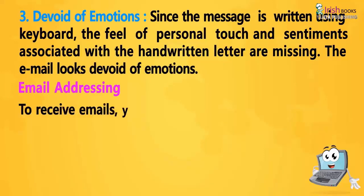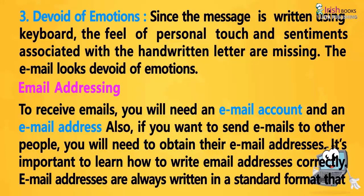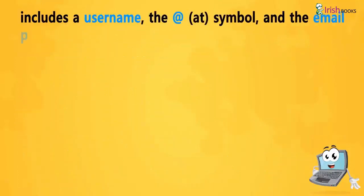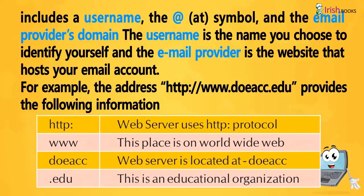Email Addressing: To receive emails, you will need an email account and an email address. Also, if you want to send emails to other people, you will need to obtain their email addresses. Email addresses are always written in a standard format that includes a username, the at-the-rate symbol (@), and the email provider's domain. The username is the name you choose to identify yourself, and the email provider is the website that hosts your email account. For example, the address http://www.doeacc.edu provides the following information.